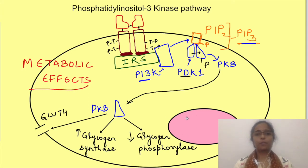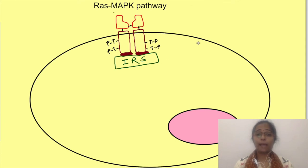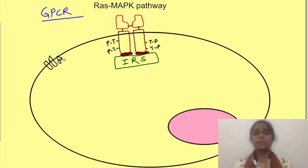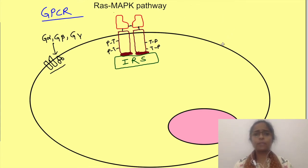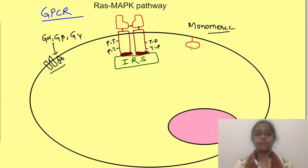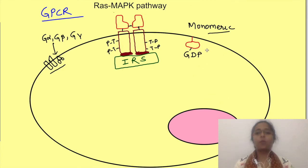The other mechanism by which insulin acts is activation of the Ras-MAP kinase pathway. You may know that G protein coupled receptors are linked to trimeric G proteins with three subunits — G alpha, G beta, and G gamma. Apart from these trimeric G proteins, cells also have monomeric G proteins which can bind GDP and GTP. In the inactive state they are bound to GDP, while when active they bind to GTP. Insulin signaling also involves activation of these monomeric G proteins — specifically the Ras protein.